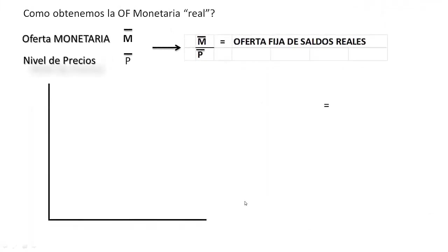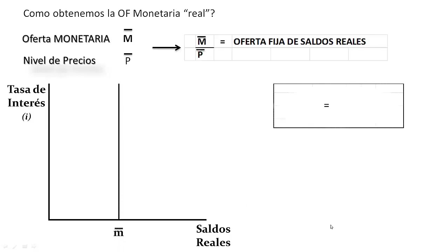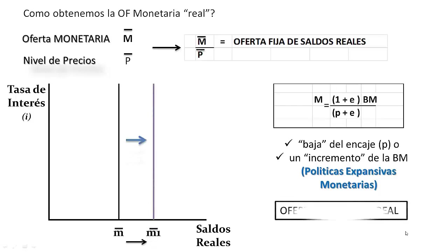¿Cómo graficamos la oferta de dinero? Si medimos en el eje de la abscisa el interés y en la ordenada la oferta monetaria de saldos reales, que es fija y está representada por una línea recta vertical, pues no depende del tipo de interés. Partiendo de la fórmula hallada, si disminuye el encaje o aumenta la base monetaria como consecuencia de políticas monetarias expansivas, se produce un traslado hacia la derecha de la línea recta, reflejando el aumento de la oferta monetaria real.